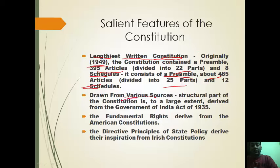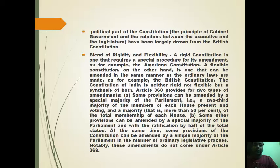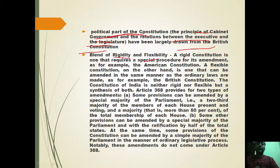The Constitution is drawn from various sources. Its structural part is largely derived from the Government of India Act 1935 — about 50 to 60 percent. Fundamental rights are derived from the American Constitution, DPSP from the Irish Constitution, and the political part including cabinet government and the relation between executive and legislature from the British Constitution.